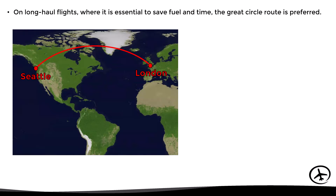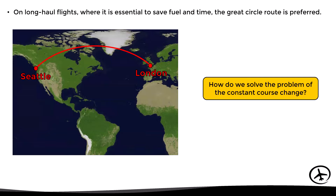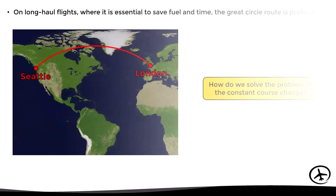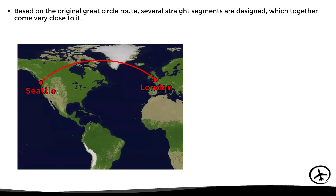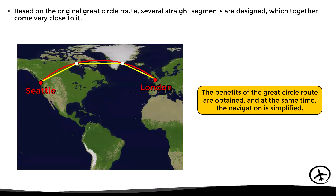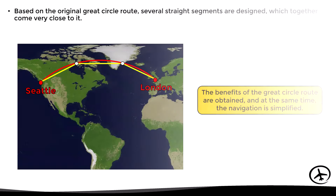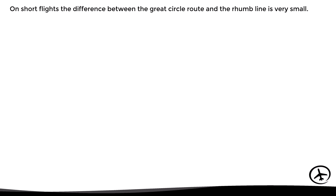On long-haul flights where it is essential to save fuel and time, the great circle route is preferred. To solve the problem of constant course changes, several straight segments — which are in essence rhumb lines — are designed based on the original great circle route. Together these segments come very close to the great circle route, so most of its benefits are obtained while the navigation is simplified.